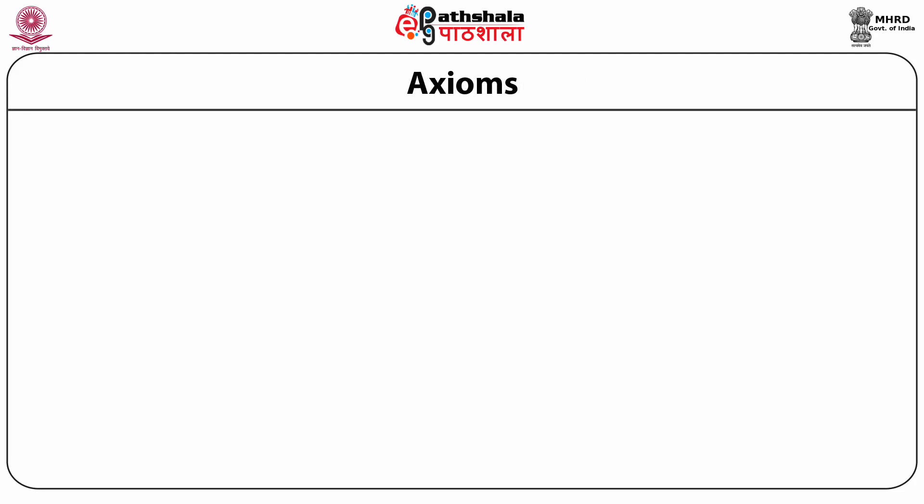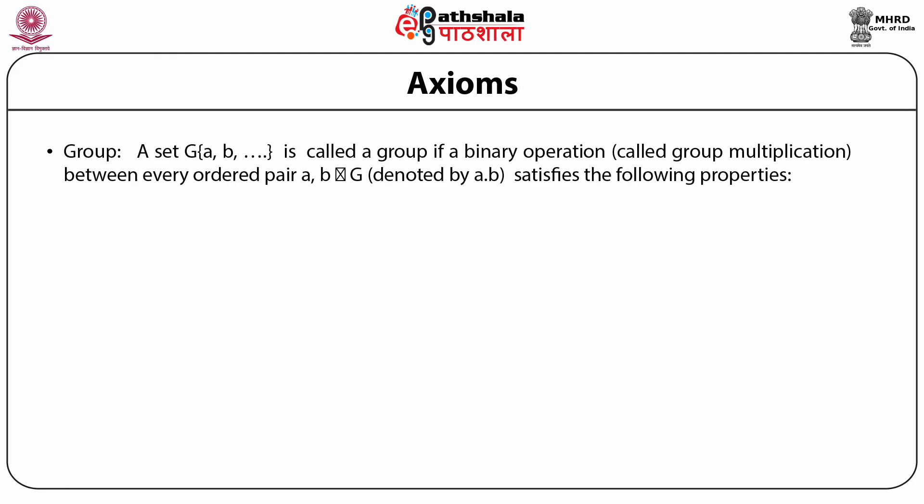We start with the definition of a group and introduce certain axioms. A group is a set G with elements A, B, etc., if a binary operation — called multiplication in the group sense, though it need not be arithmetic multiplication; it can be addition, matrix multiplication, or whatever — is defined for every ordered pair A and B belonging to the group G.